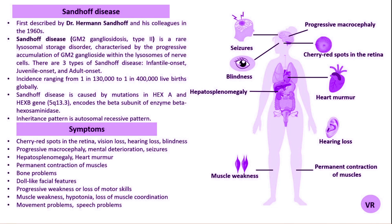Sandhoff disease is a rare inherited neurodegenerative disorder that is part of a group of conditions known as GM2 gangliosidoses. It is characterized by the progressive accumulation of GM2 gangliosides in the brain and other tissues due to deficiencies in hexosaminidase enzyme. It is a rare genetic disorder and its prevalence varies by geographic region and population.